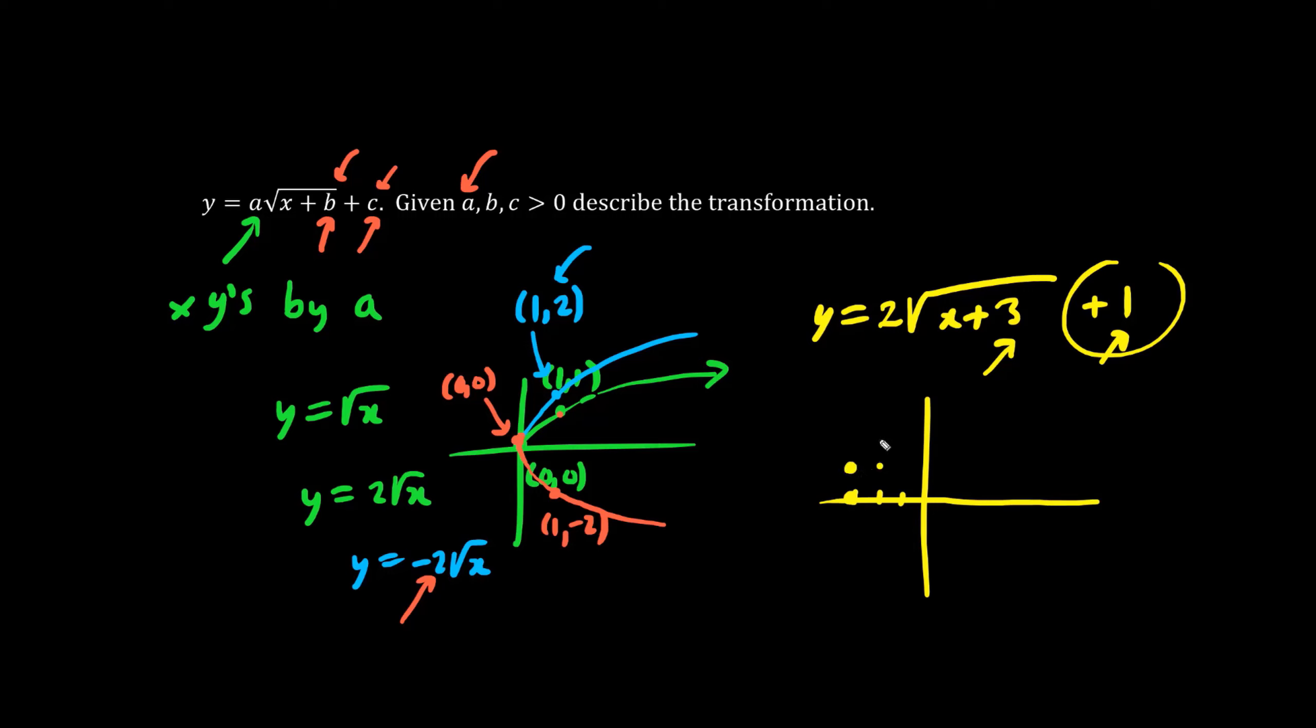Normally the graph goes 1 right, 1 up, but because the A value here is 2, we're going to go 1 right and 2 up. So this square root graph curves upwards and towards the right, and it's twice as tall. Negative 3 comma 1 is where it starts.